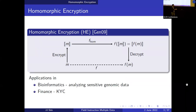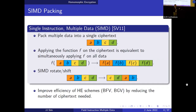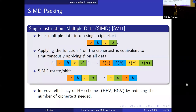As we heard earlier this morning, homomorphic encryption is essentially a way to perform computations on encrypted data. We have a message, encrypt it, perform some function on the ciphertext, and when we decrypt, we get a plaintext as if we applied the function on the plaintext message itself — with applications in bioinformatics and finance. One key feature is SIMD packing, which allows us to pack multiple data into a single ciphertext. When we apply a function on the ciphertext, it's equivalent to applying the same function on every individual message. Rotation and shift operations allow intra-vector operations, improving efficiency by reducing the number of ciphertexts needed.